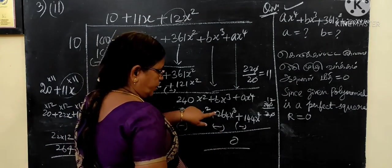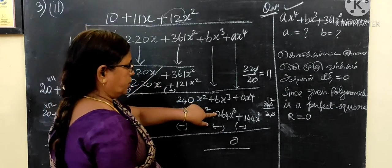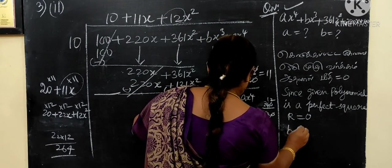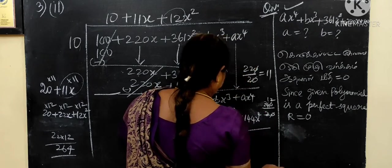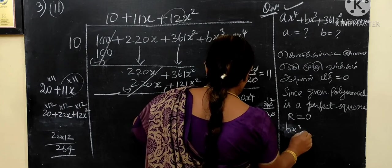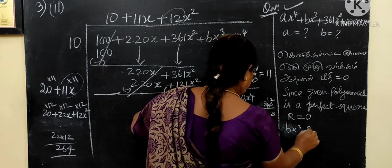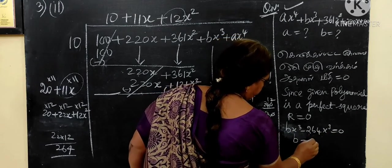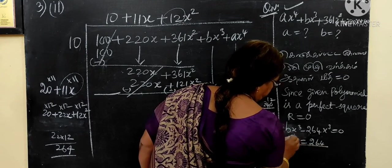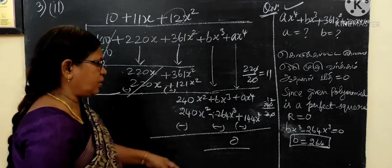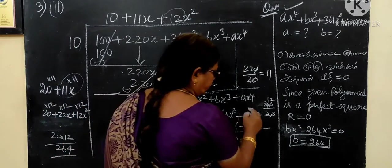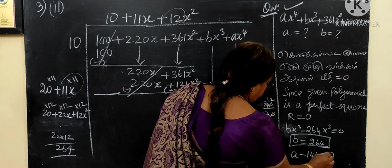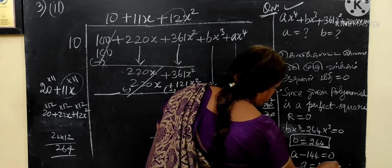So, b is equal. Now, here we go. Now, x cube is equal to 0. bx cube is equal to 0. A minus 144 sum 0, so A sum 144.